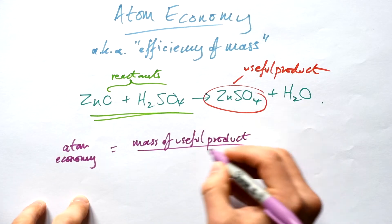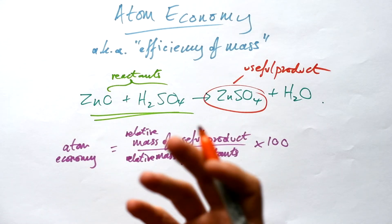The equation for atom economy is mass of useful product divided by mass of reactants, times 100 to turn it into a percentage. What mass do we use? We don't have proper masses here, but it doesn't matter as long as we're consistent. We can use relative masses. You'll always be given relative formula masses in the question or periodic table. The mass number is the relative atomic mass - that's what we use. Zinc has a relative atomic mass of 65.